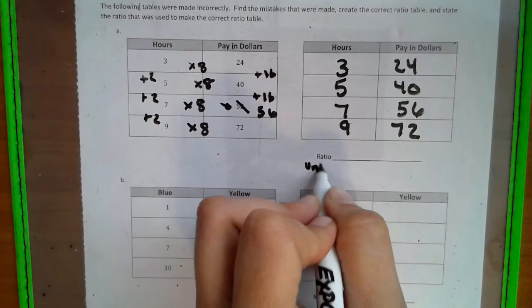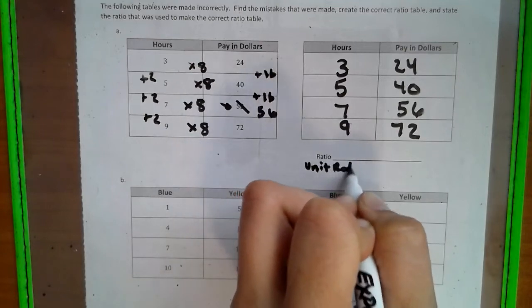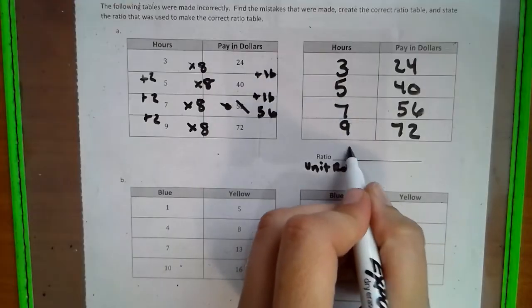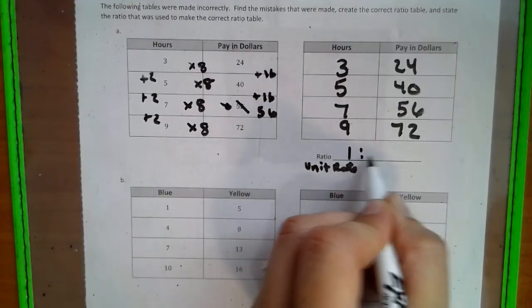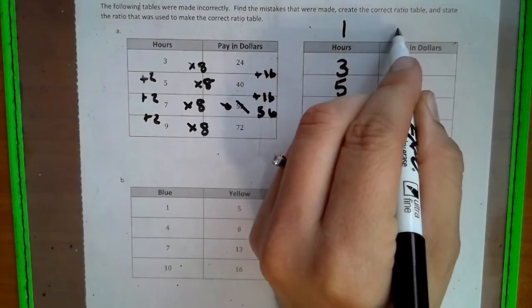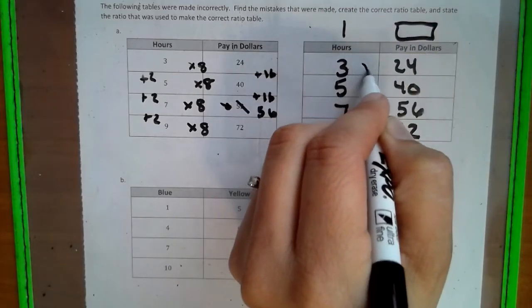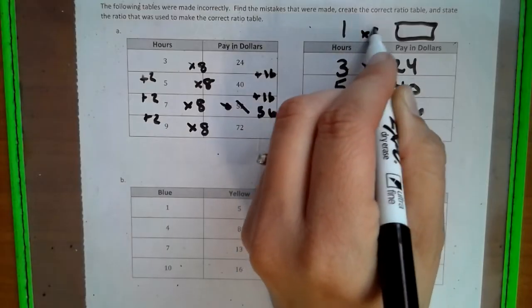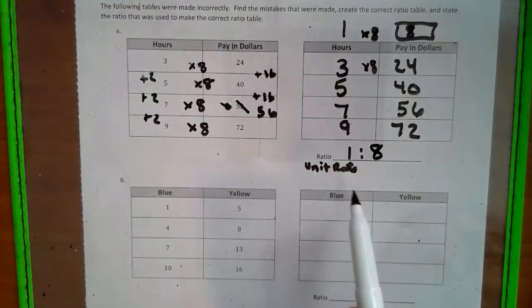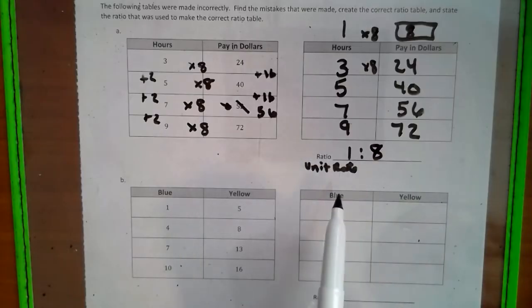But when we're talking ratio, we usually like to look at it as a unit rate, the 1 to something. So if we look at the 1 to something pattern, 1 gets to this number by the same pattern we did here, which was times 8. So 1 times 8 is 8. So that is our ratio. Our unit rate, our ratio is 1 to 8.